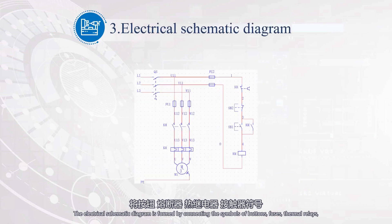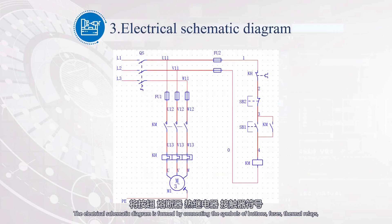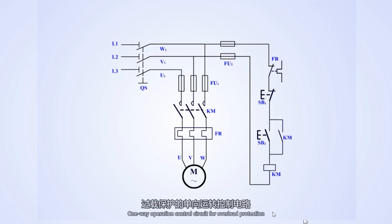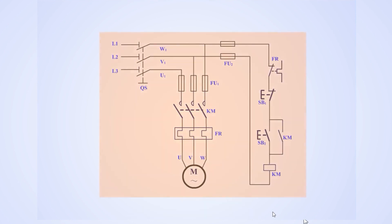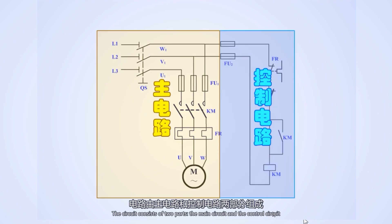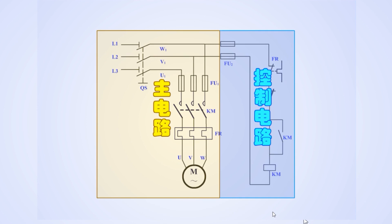The electrical schematic diagram is formed by connecting the symbols of buttons, fuses, thermal relays, and contactors according to the control requirements. Let's take a look at the control process: one-way operation control circuit for overload protection, as shown in the figure. The circuit consists of two parts — the main circuit and the control circuit. Now let's analyze how the circuit works. Turn on the power switch QS — power enters.